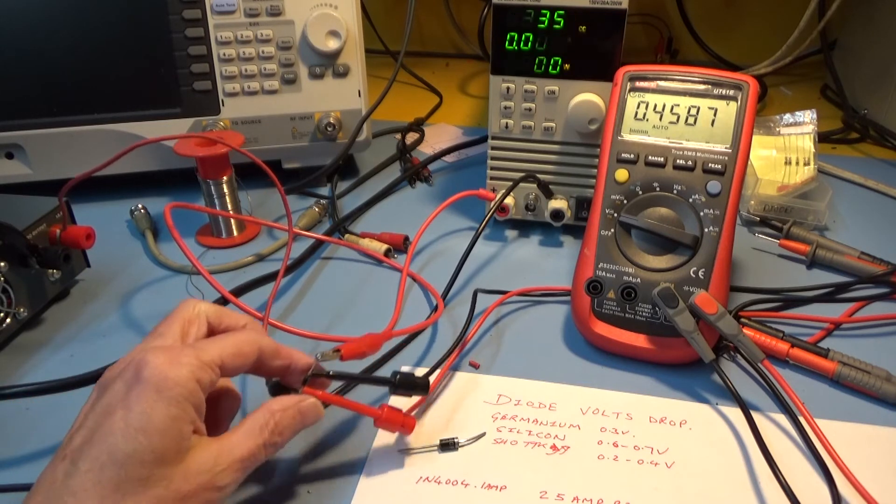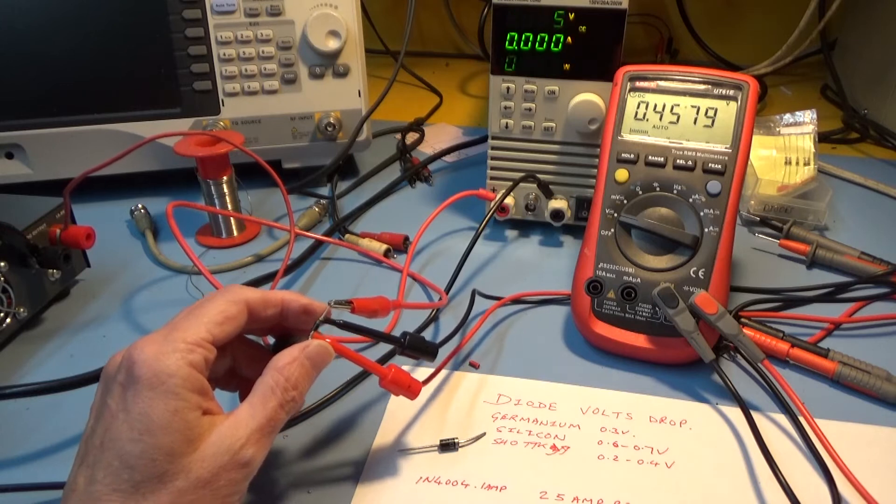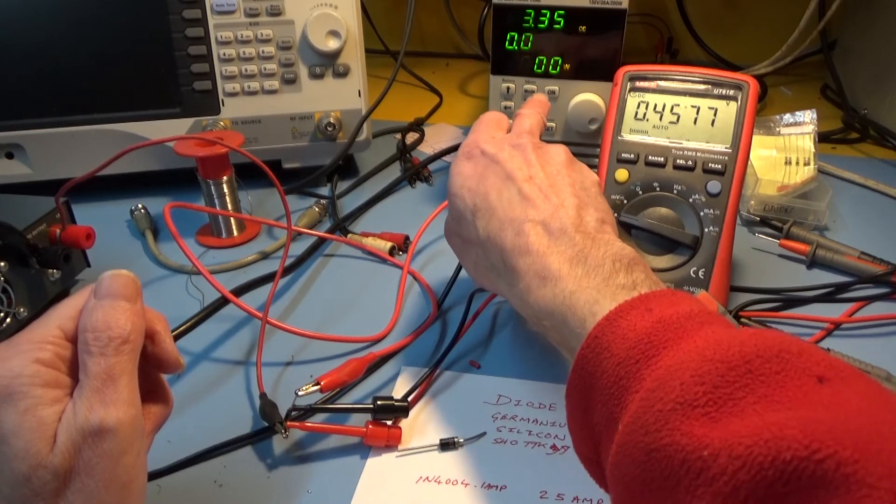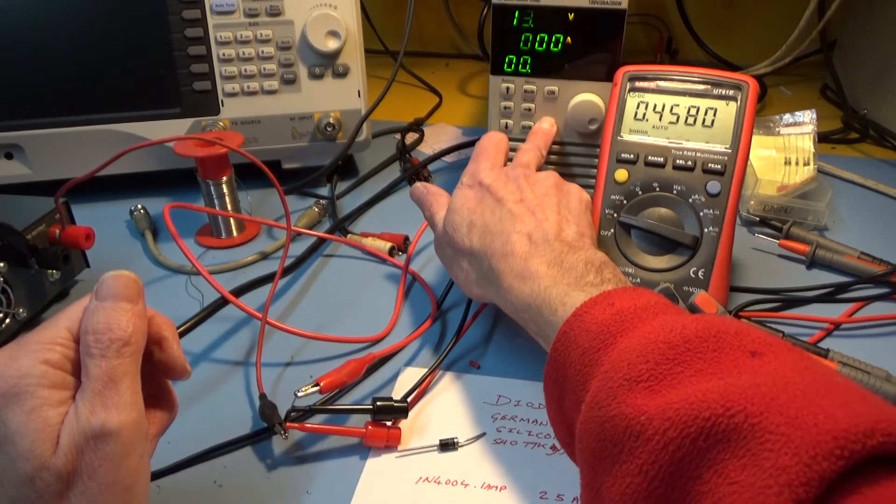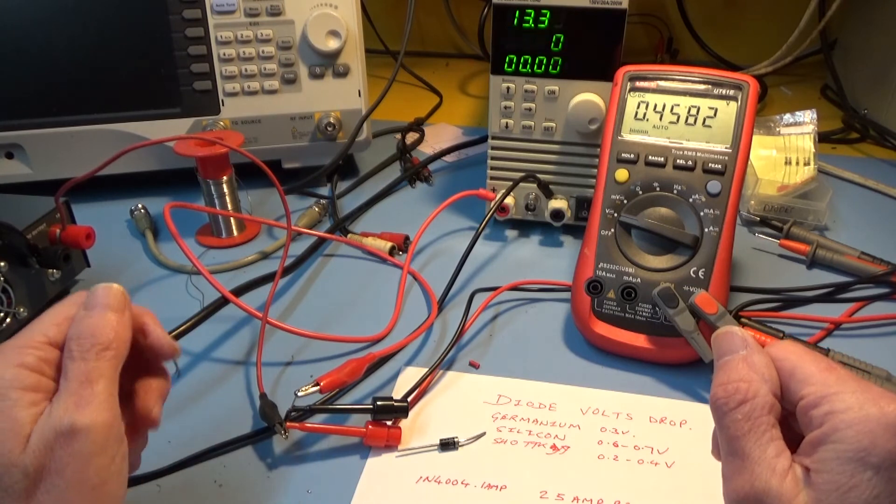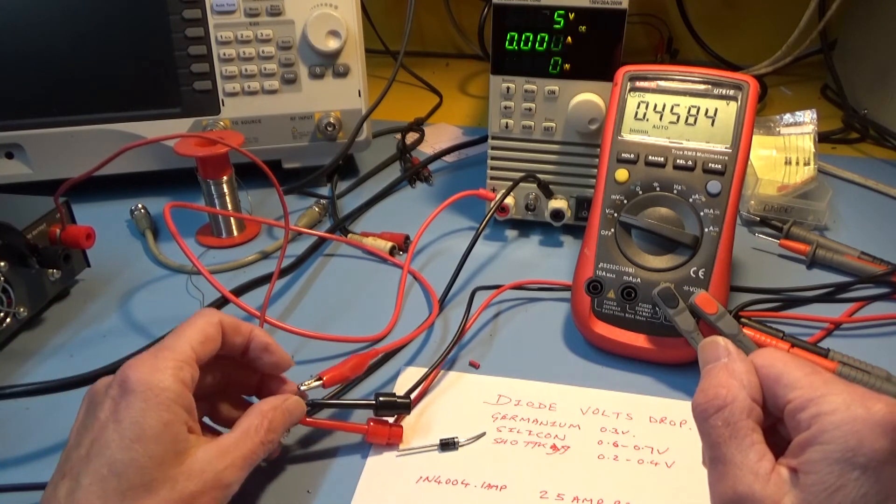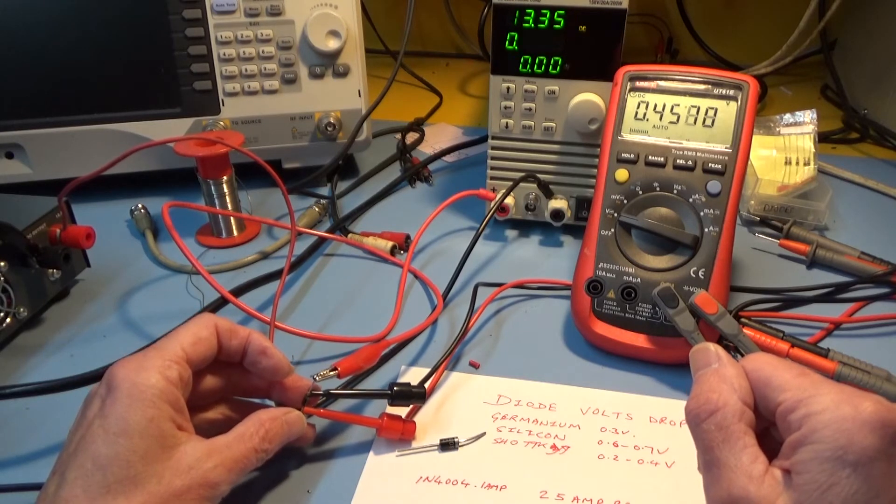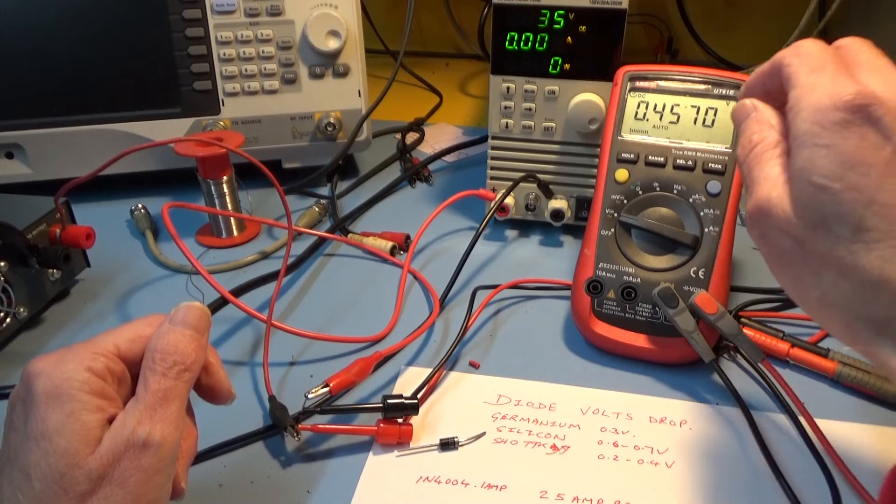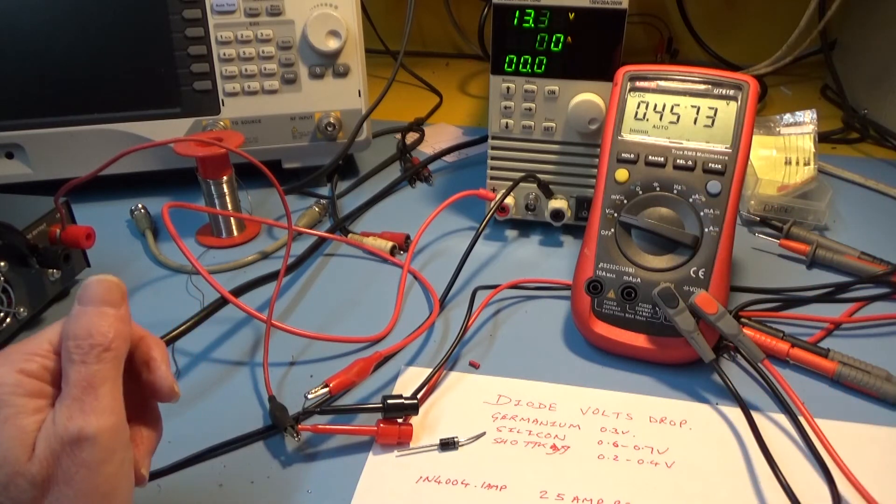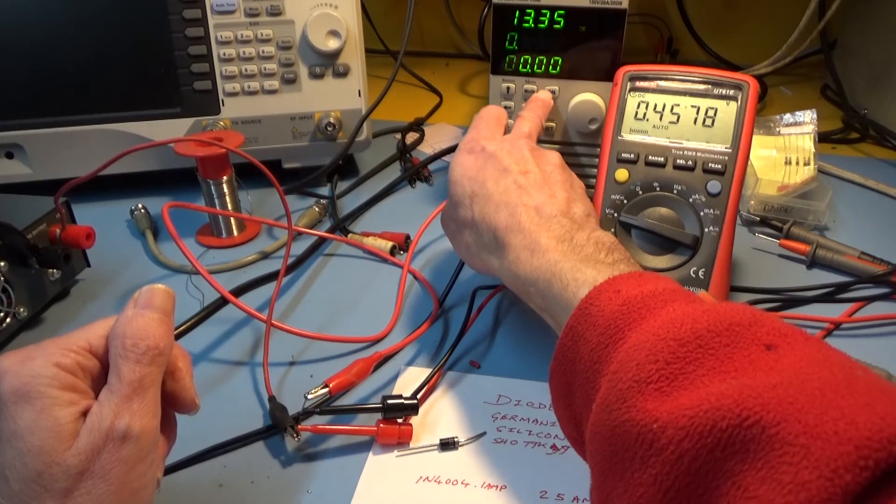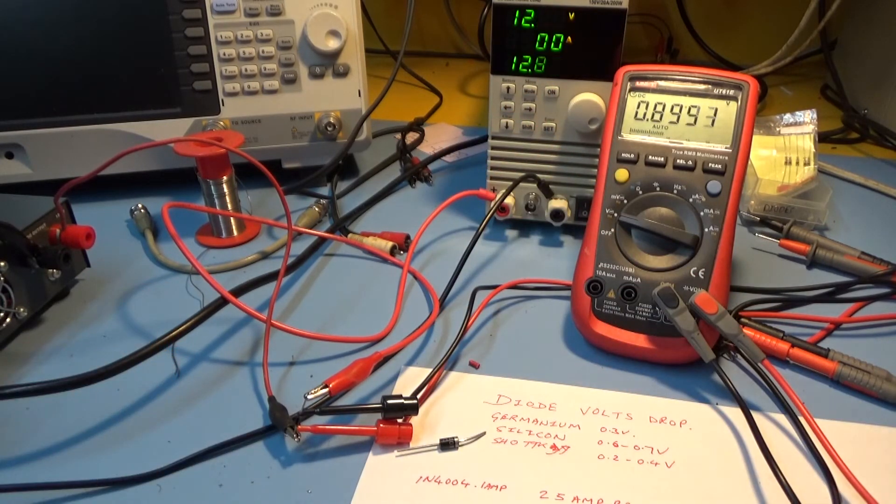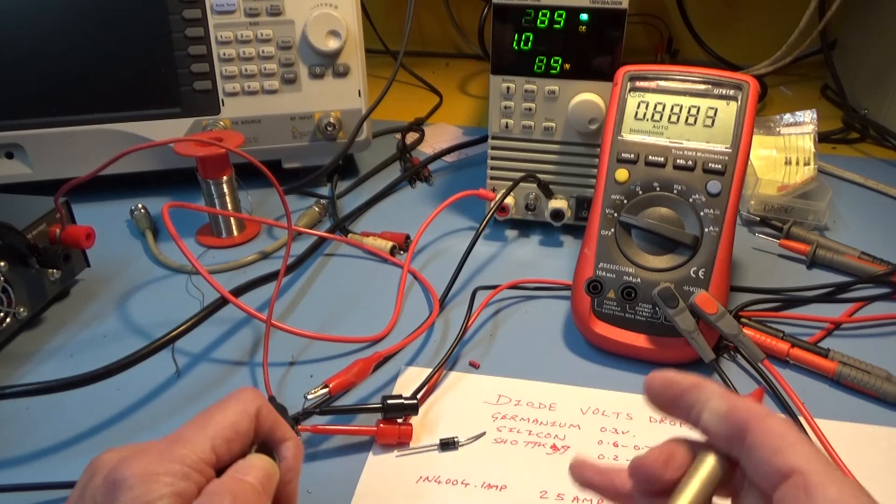At the moment I've got the smallest one in there, the 4004. I got my load set to 1 amp which is the absolute maximum for a diode like that. Even then I think that's only rated at that current at 25 degrees, so these tests have to be fairly quick in order not to blow up the diode. I turn my load on, I'm drawing one amp and what do we have on the multimeter now? We've got 0.9 volts.